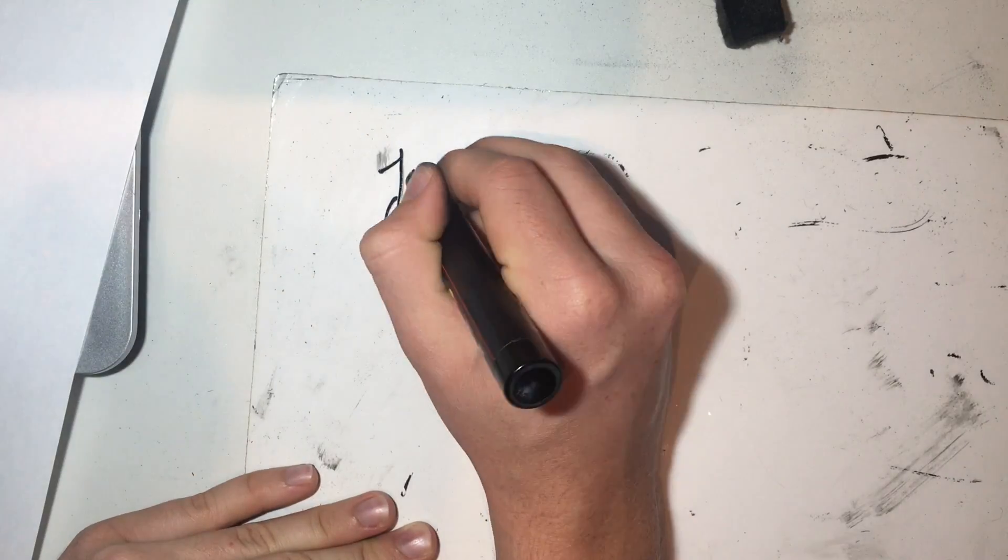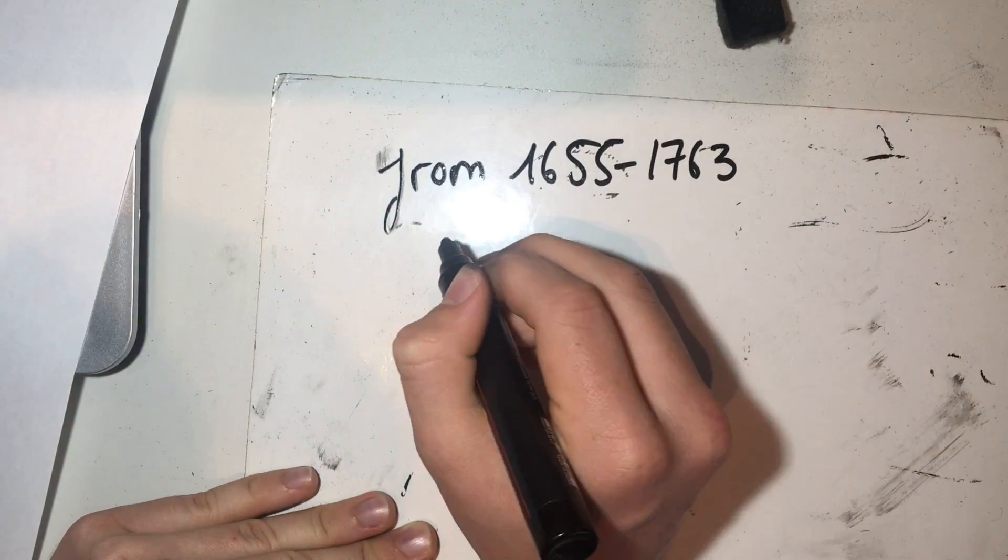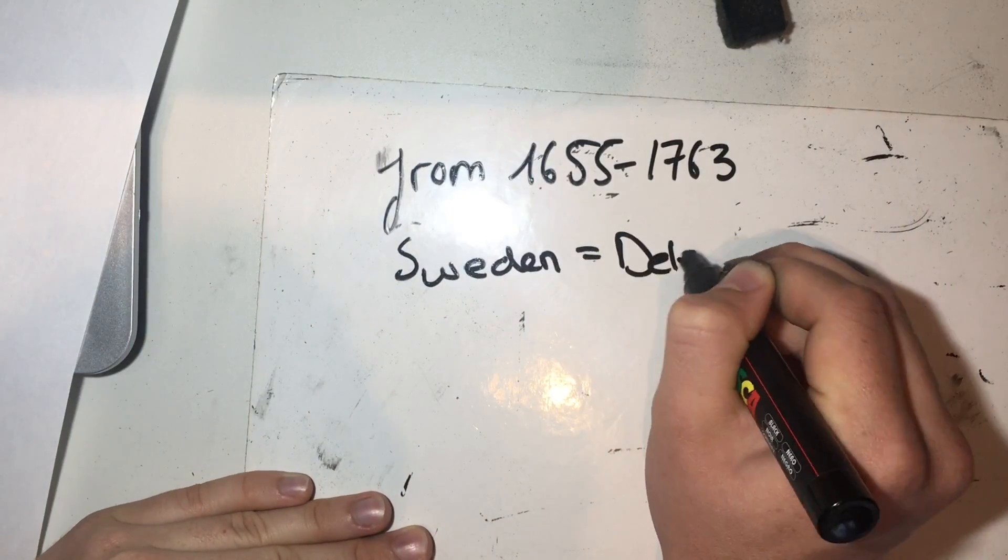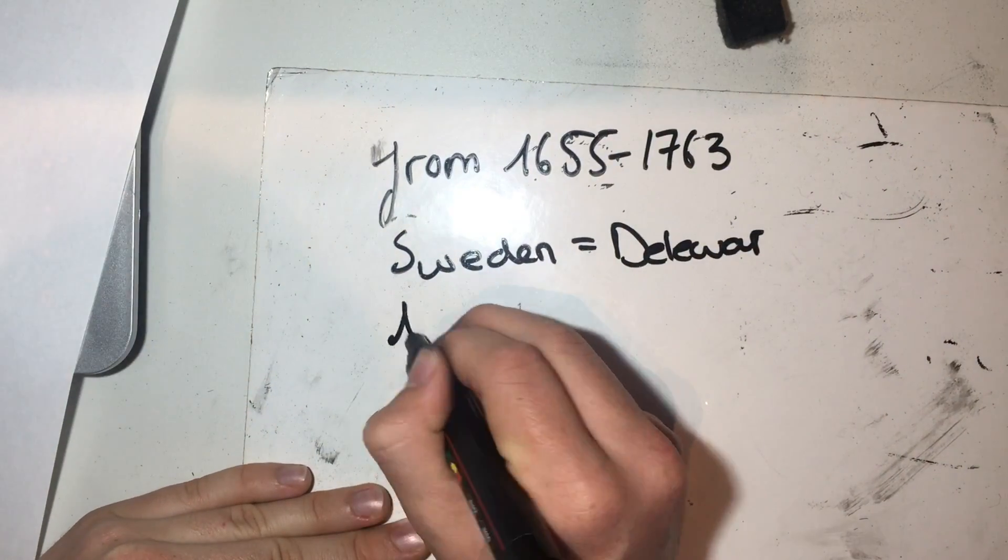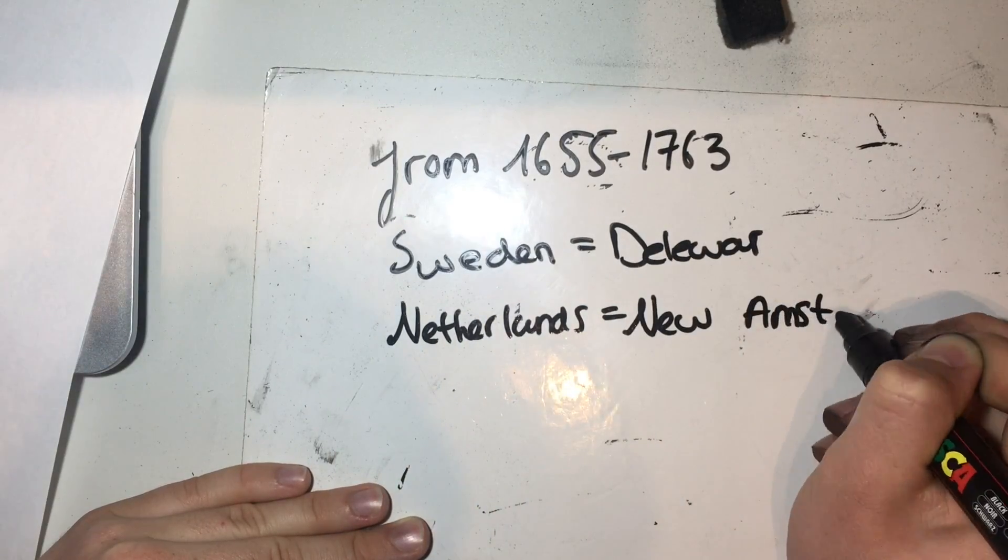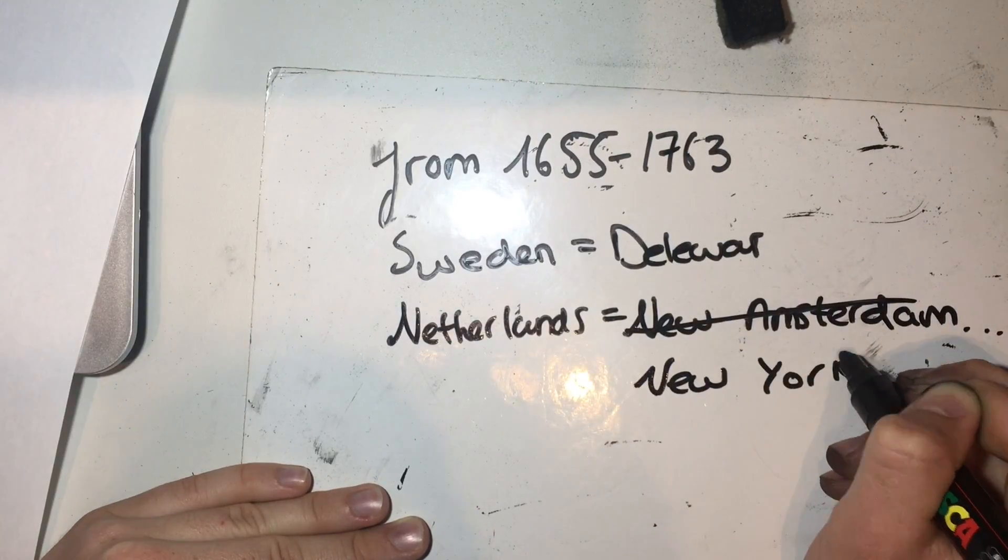However, not everything went the settlers' way. Even in other countries, other parts of America, countries controlled some of the language. For example, the Swedish came up with Delaware, and the Dutch came up with New Amsterdam, later renamed New York City in 1664.